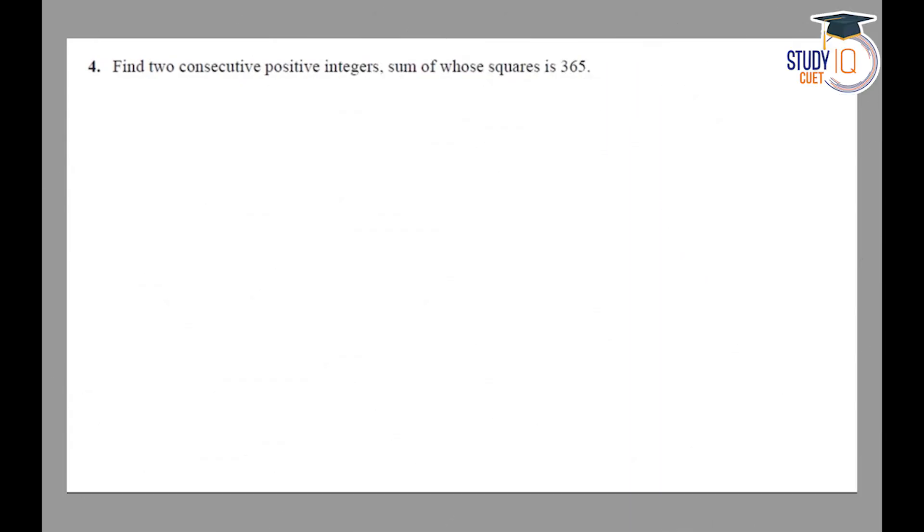Hello students, this is question number 4 from exercise 4.2 of NCERT class 10th. In this question, we have to find two consecutive positive integers, sum of whose squares is 365.